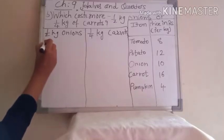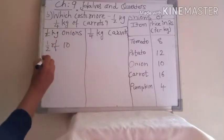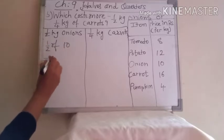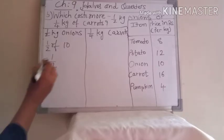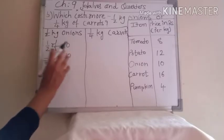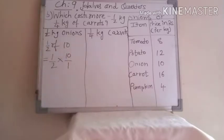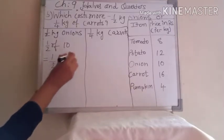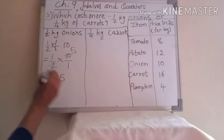Now how can you solve this with the method? Write here: half of 10, then put equal to sign, write 1 upon 2 — you can say one half also — then multiply 10. You can write 10 directly, or put a line and 1 to make it a fraction. So 10 divided by 2: in the 2 table, 2 fives are 10. So the price of half kg onion is rupees 5.